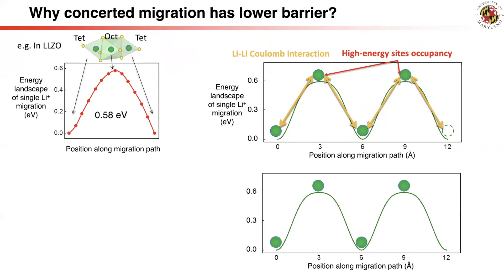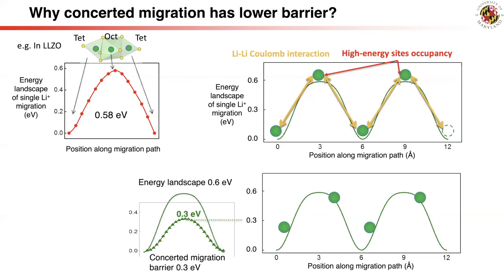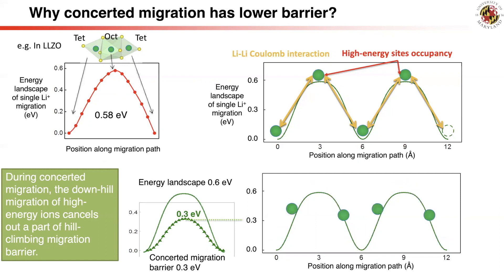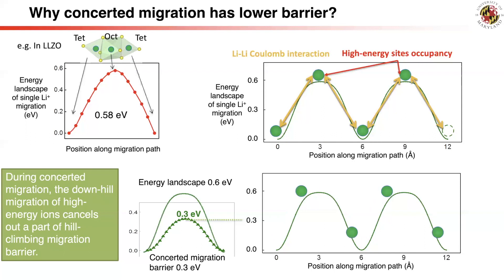We then study ion diffusion in this simple model. While a single ion hop would have a barrier of 0.6 eV, the concerted migration of four ions would only have a barrier of 0.3 eV. This mechanism is intuitive to understand from the animation: as some lithium ions are climbing uphill of the energy barrier, some others are going downhill simultaneously, effectively cancelling out the overall energy barrier of multiple ion migration.